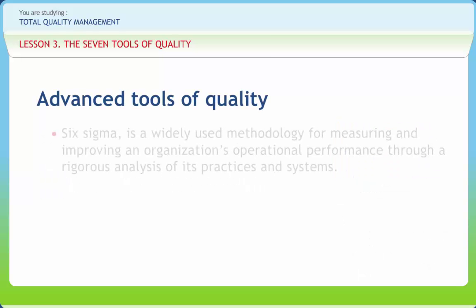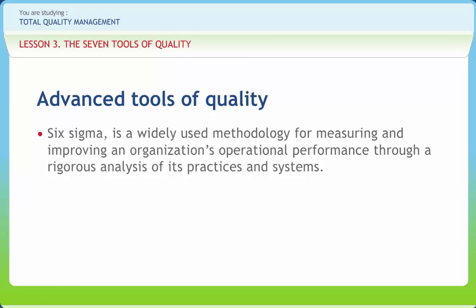Six Sigma is a widely used methodology for measuring and improving an organization's operational performance through rigorous analysis of its practices and systems. Six Sigma seeks to identify and remove the causes of defects and errors in manufacturing and business processes.